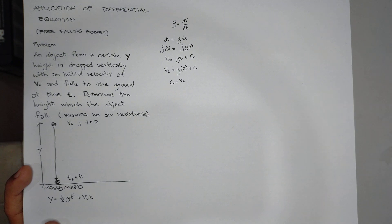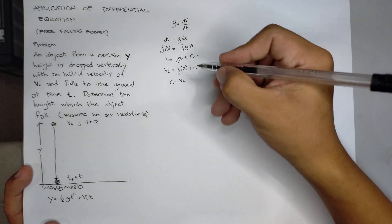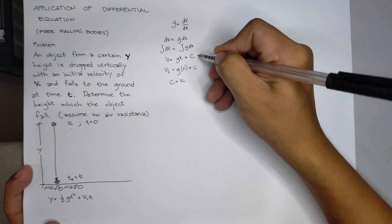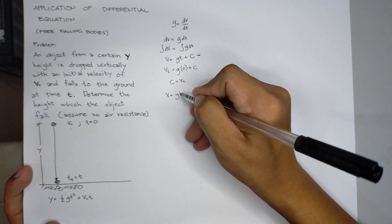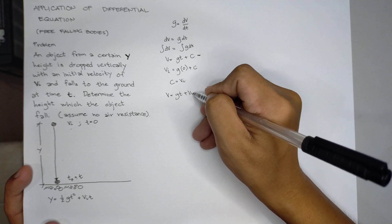Therefore, our equation, from here, we determine that v is equal to g t plus vi, where v is velocity at any amount of time.